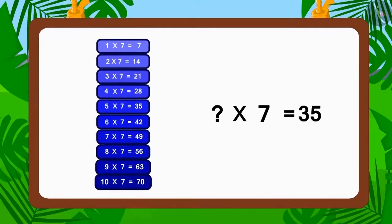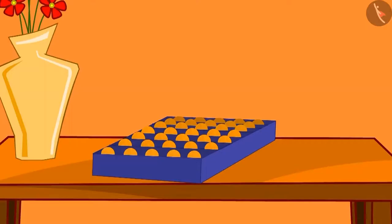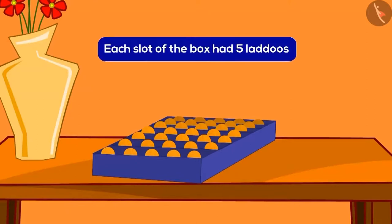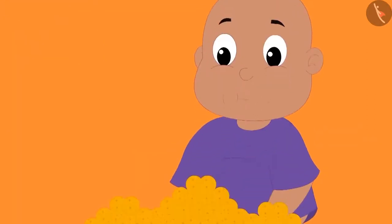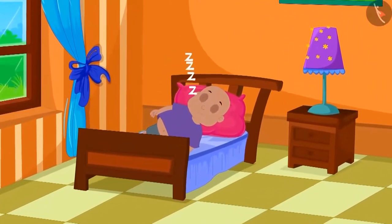You just have to find out when does thirty-five appear in the table of seven. So, what multiplied with seven is thirty-five? Five multiplied with seven. Each slot of the box had five ladoos. Bablu ate a lot of ladoos and started feeling sleepy. Bablu slept on the bed.